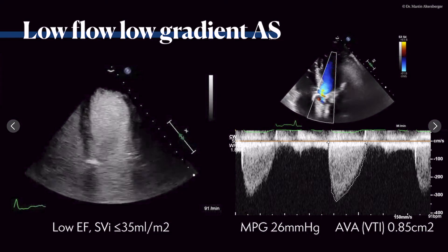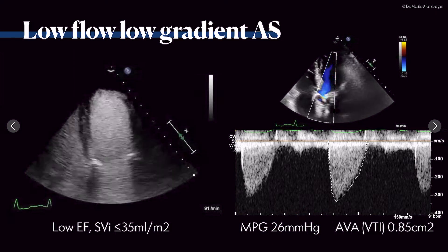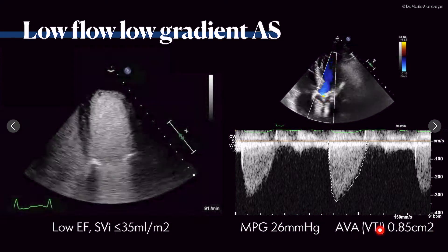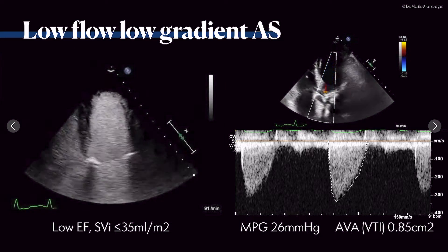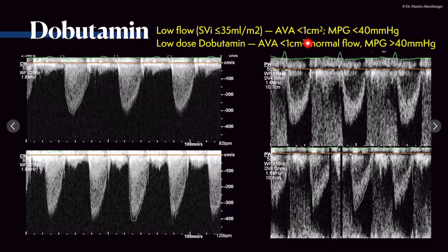The mean pressure gradient of 26 mmHg suggests this is not severe aortic stenosis, but the aortic valve area says it is severe aortic stenosis. What can we do? We can apply low-dose dobutamine stress echo in this low-flow situation where the stroke volume index is below 35 milliliters per square meter, with a low gradient and a very small remaining aortic valve area.